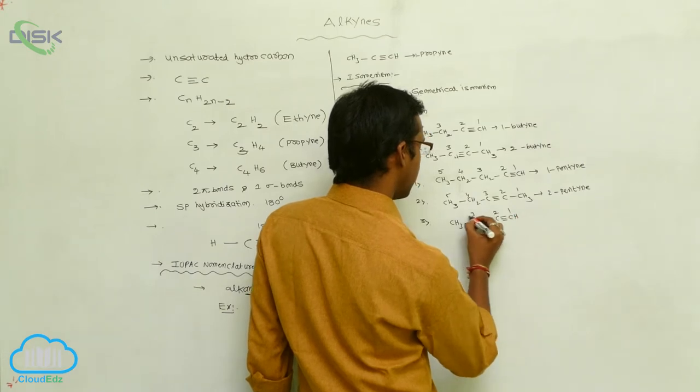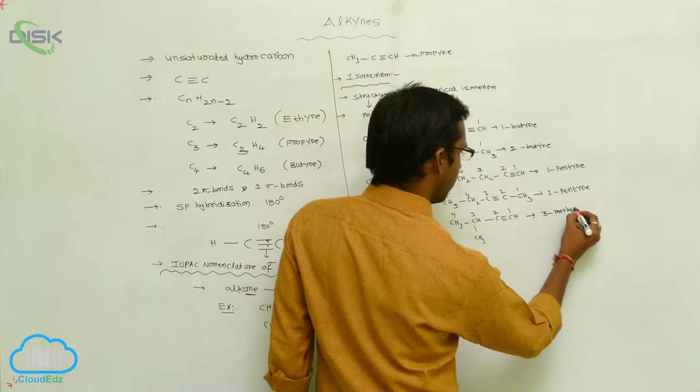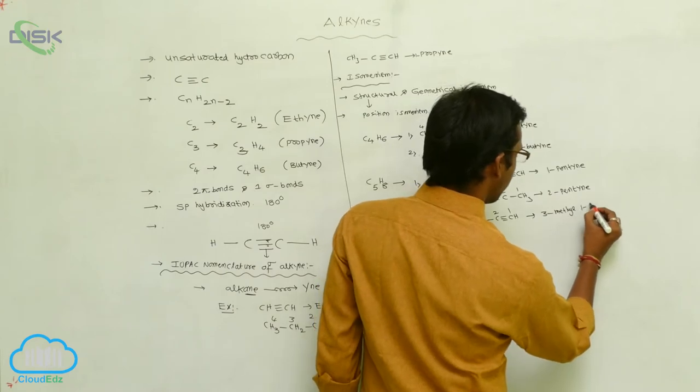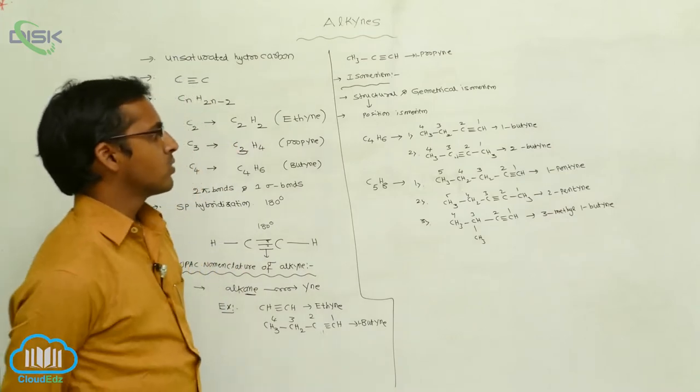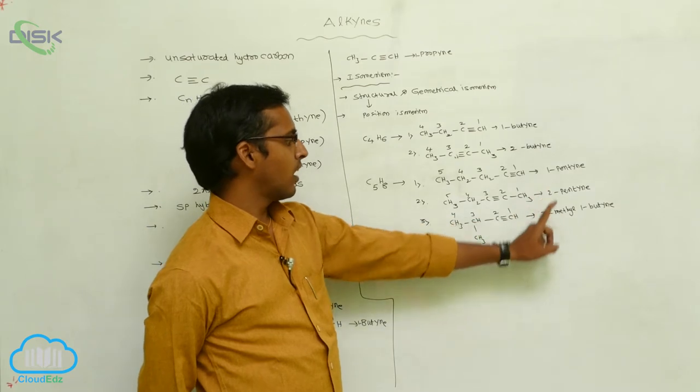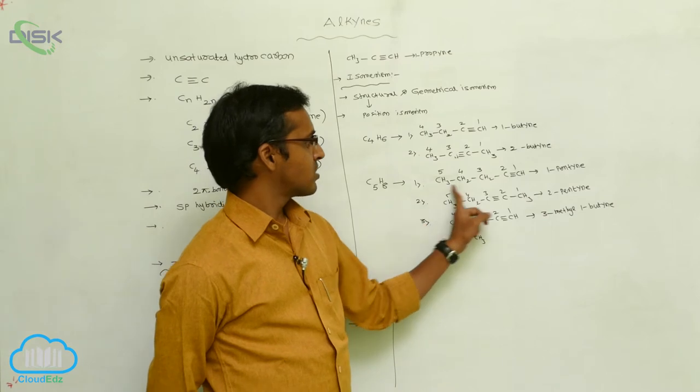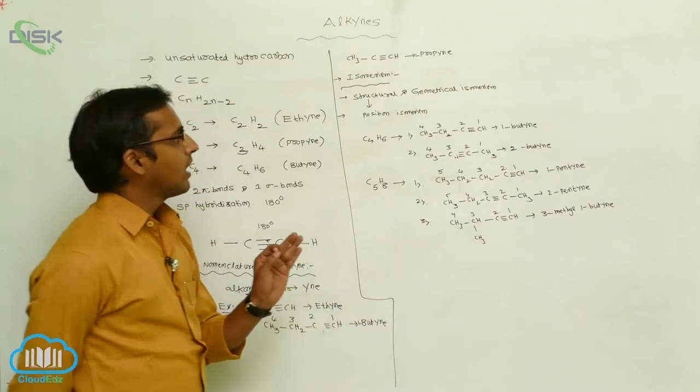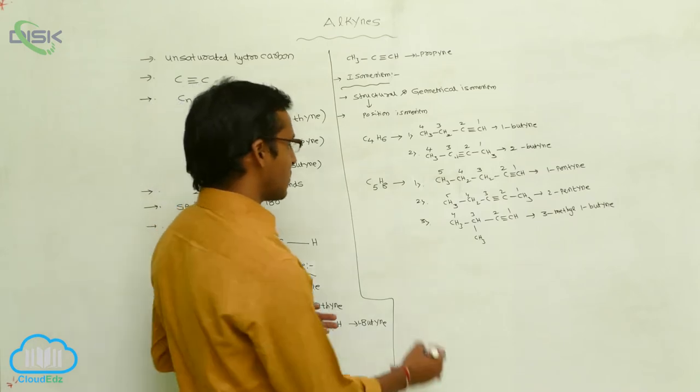And 4 carbons are present. 4 carbons means butyne, that is 1-butyne. So this is your position isomerism. See here, 1 and 2 is your position isomerism. And first one and third one is chain isomerism - this is your straight chain and chain, this is your isochain. So the alkynes exhibit structural isomerism as well as geometrical isomerism.